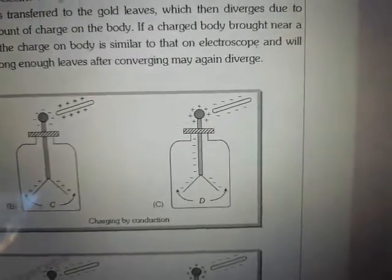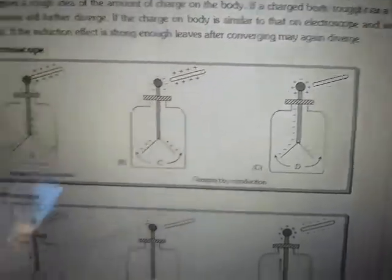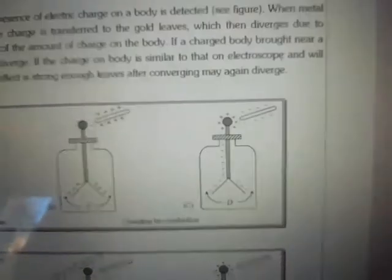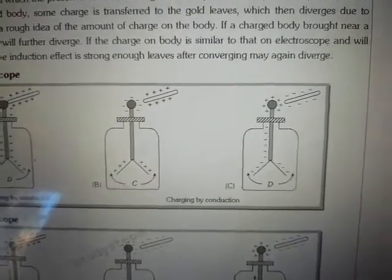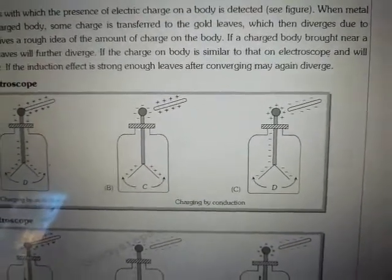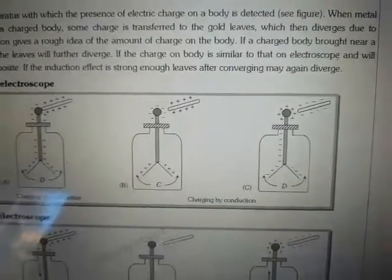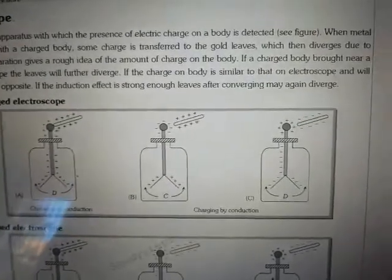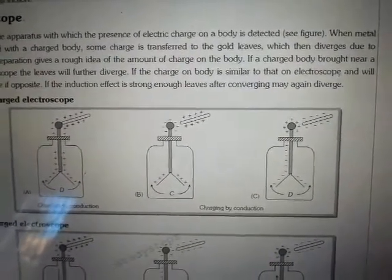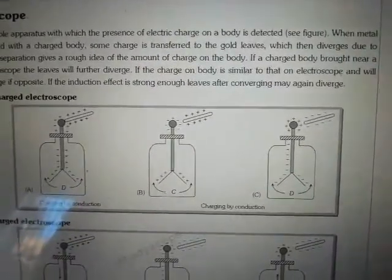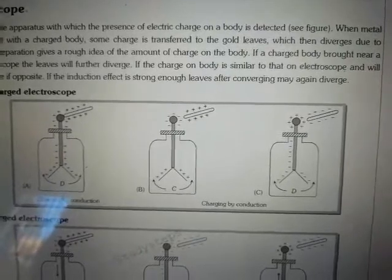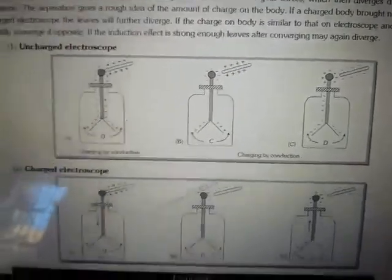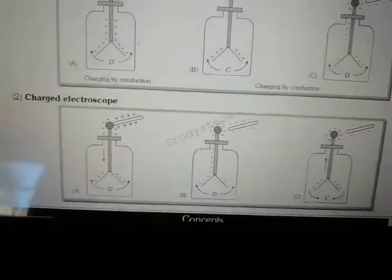When we deal with these two concepts — charging a body by conduction and induction — what is the result? Repulsion. We get to know that the charges are accumulated by both processes. The result is that the divergence of the gold leaves is clearly observed.